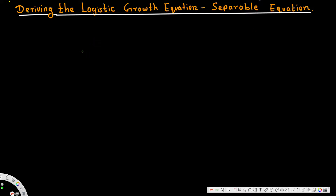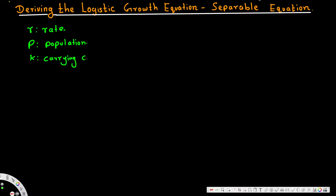Hey, what's going on guys. In this video we are going to see how to derive the logistic growth equation. First we are going to introduce some terms: r is equal to rate, p is equal to population, and k is carrying capacity.